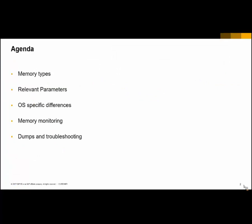We will cover this agenda. We will first distinguish between different memory types and check which are the relevant parameters that should be defined and configured for each case. There are also some differences to be considered depending on each platform. We will also cover new features provided in memory management as of kernel release 740. On the memory monitoring section, I would like to show some transactions and reports that can be used to monitor the memory consumption on a running system. Finally, we will cover the most common dumps related to shortage in memory resources and how to solve them.